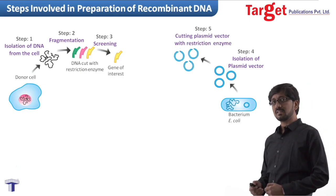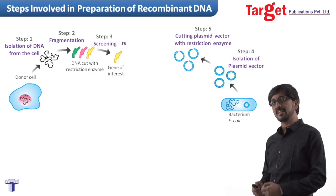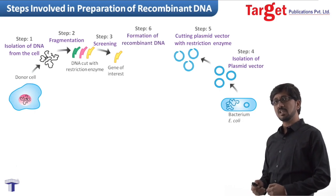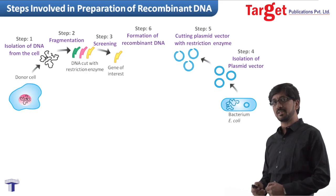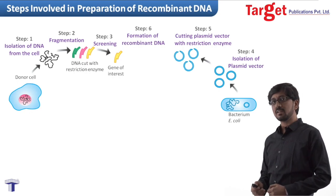After this the next step is formation of recombinant DNA. Here what we do is we ligate the gene of interest with the cloning vector with the help of an enzyme, DNA ligase.